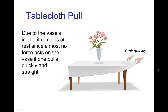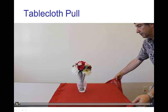The classic example of the Law of Inertia for an object at rest remaining at rest is the tablecloth pull. In this case, we have a vase of flowers and if a tablecloth is pulled out from underneath the vase quickly, there's only a very small force acting on the vase, and the inertia of the vase keeps it in place. Let's look at a quick video of that.